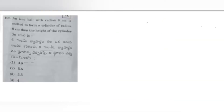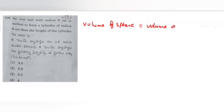An iron ball with radius 6 centimeters is melted to form a cylinder of radius 8 centimeters. Then the height of the cylinder in centimeters is? Given: the iron ball with radius 6 cm is melted to form a cylinder. As the sphere is melted and made into a cylinder, their volumes should be equal. Therefore, volume of the spherical ball equals volume of the cylinder.